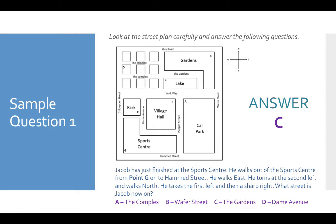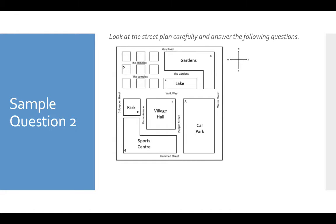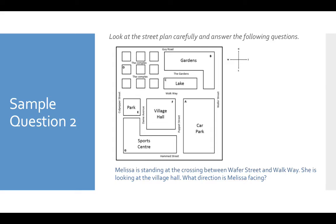So we worked that out together. But let me give you a question that you can work out by yourself. Here we've got exactly the same plan as the previous question. Melissa is standing at the cross in between Wafer Street and Walkway. She is looking at the village hall. What direction is Melissa facing? A, southeast; B, northeast; C, northwest; or D, southwest? I will give you a few minutes to work this out for yourself, write down your answer, and see if it matches up to my answer.